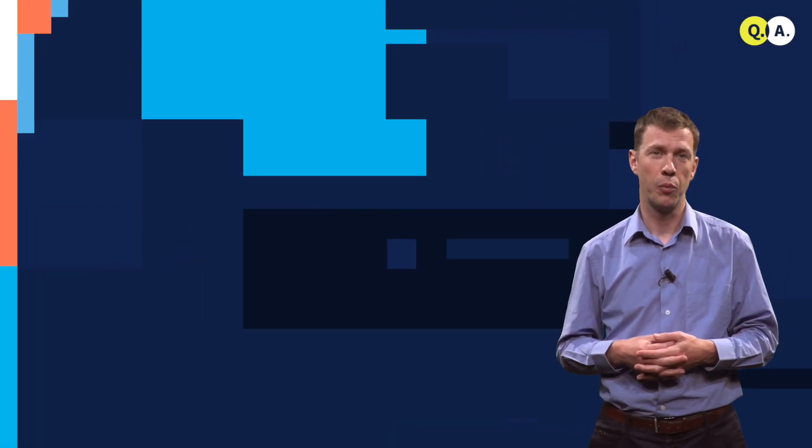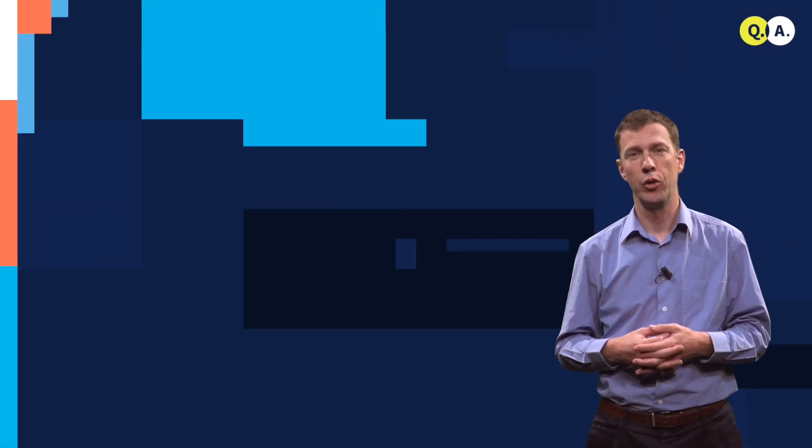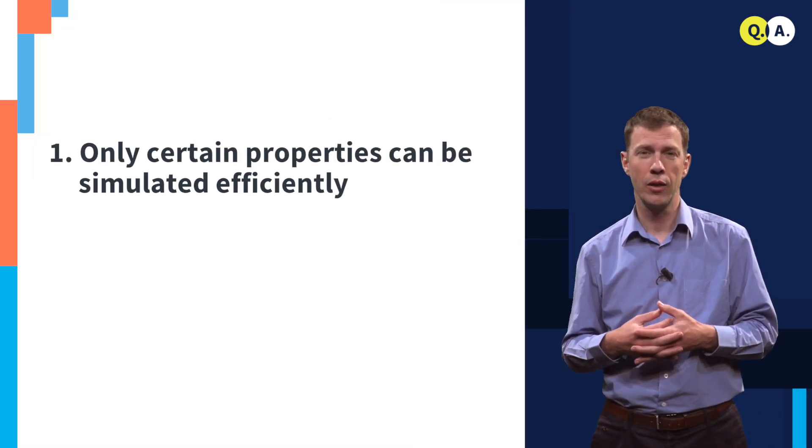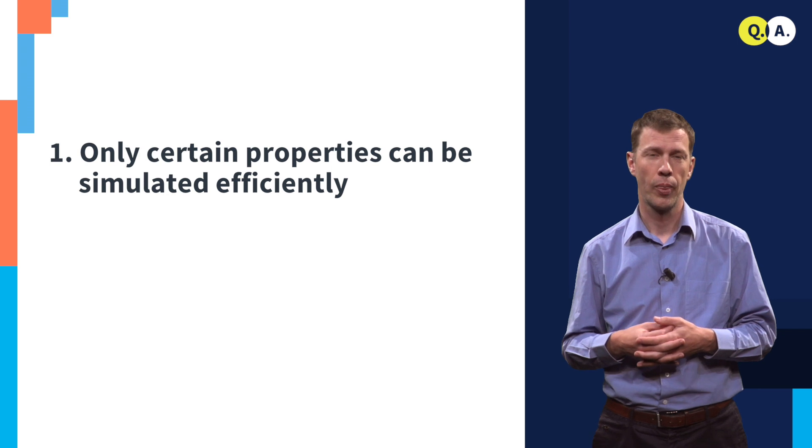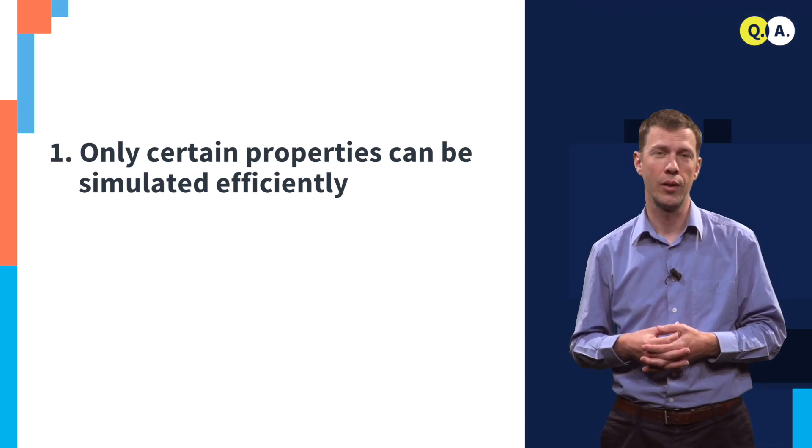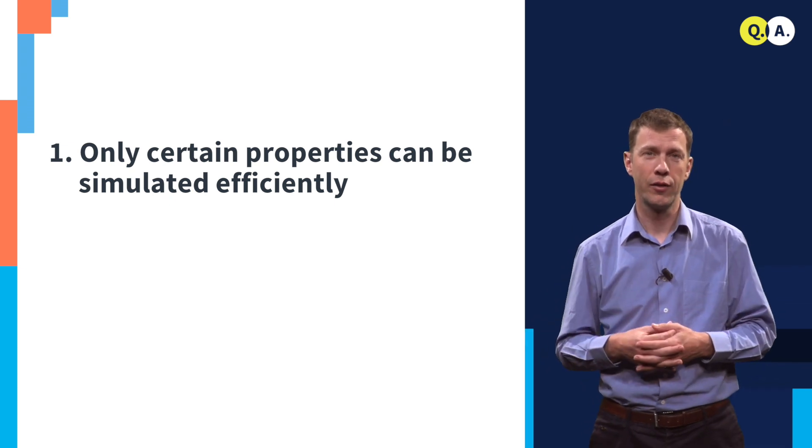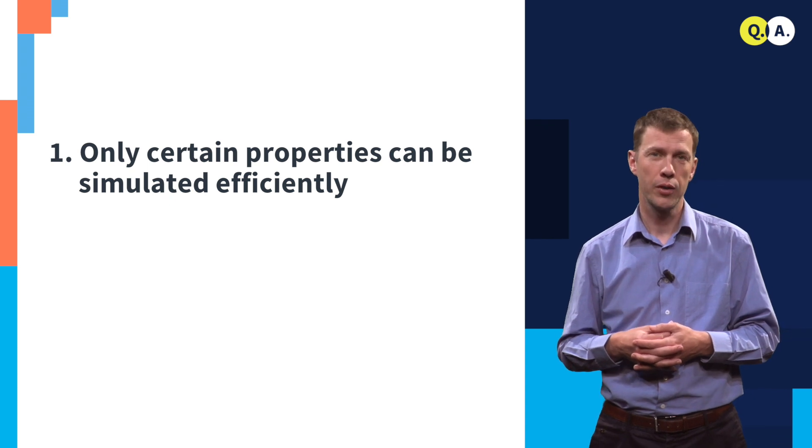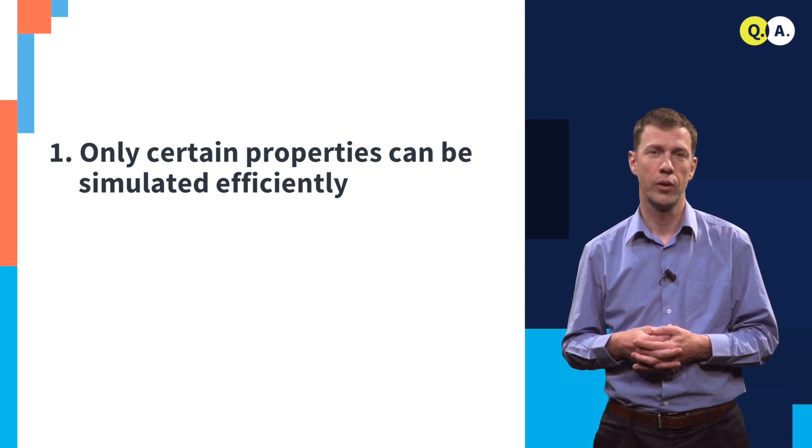What are the caveats? A few final comments about the possibilities of Hamiltonian simulation. First, only certain properties can be actually simulated efficiently. For instance, the lowest energy of a molecule we can compute efficiently. But to describe the state, the lowest energy state in full, is exponentially complex, even for a quantum computer.